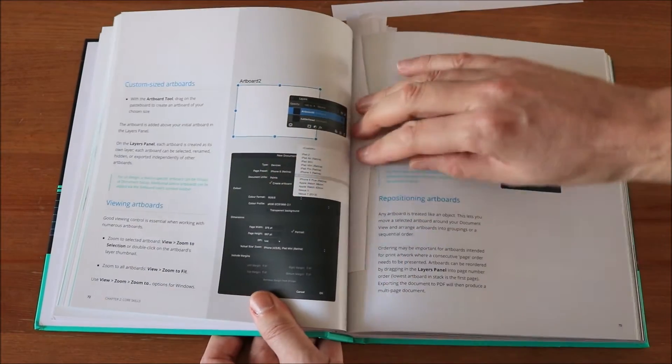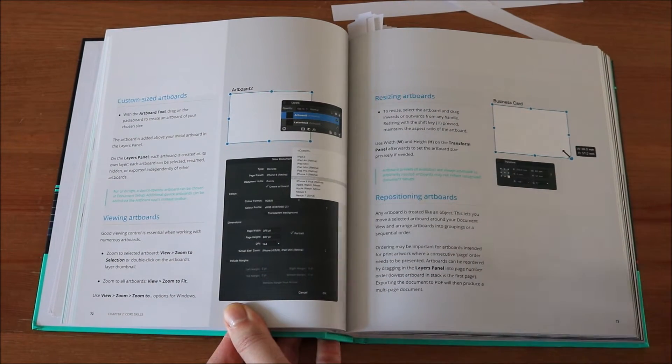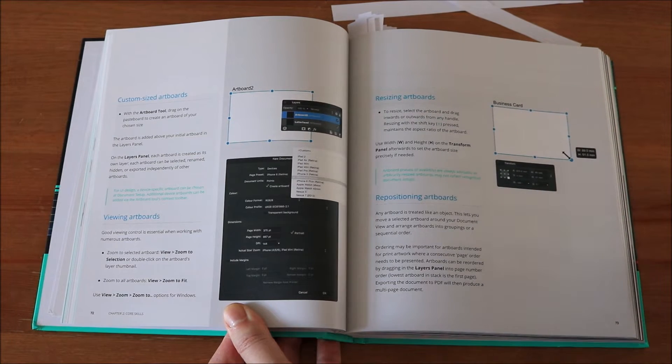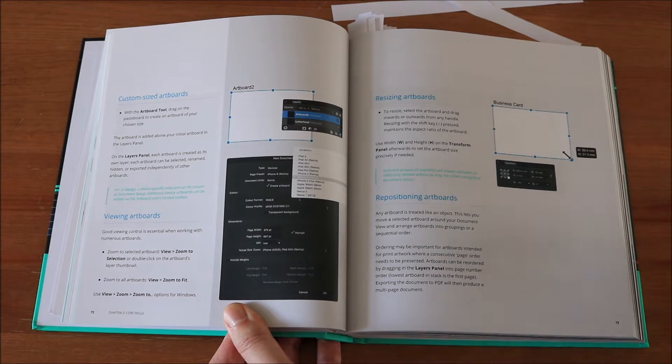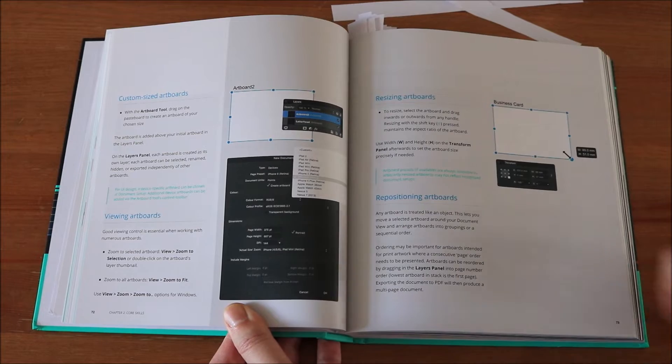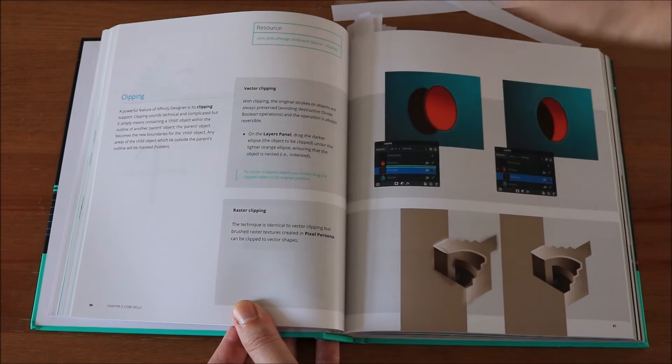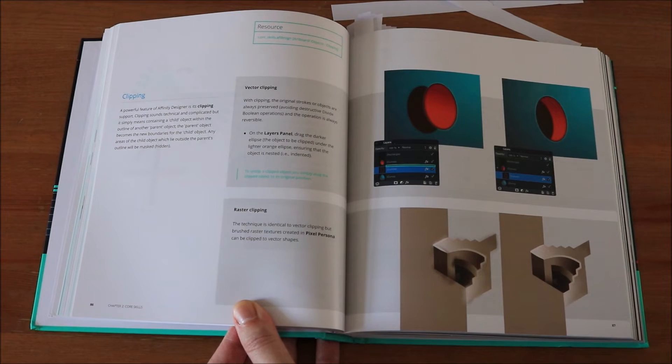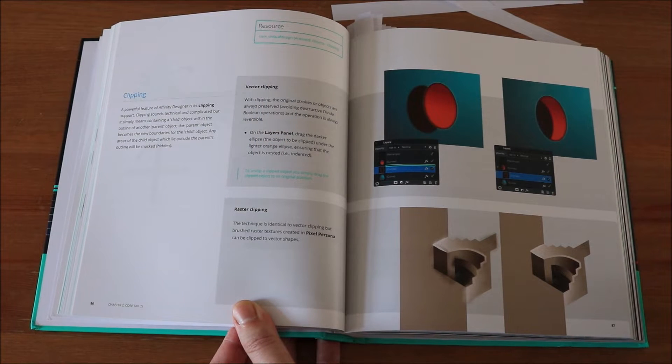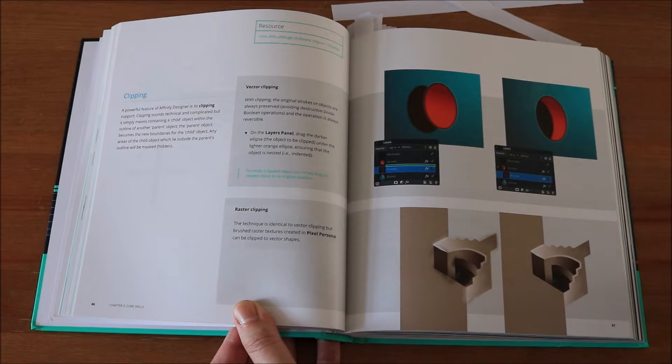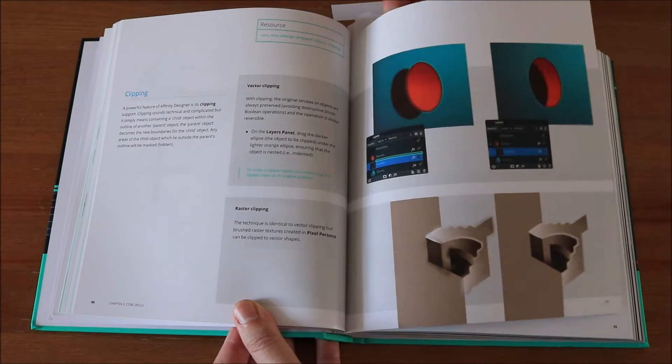Let's go to the next part and you can see here again, for example, here it explains what artboards are, how to work with them, business card. Interestingly, it's the same example that I'm giving in my video that I created in the comparison between what is Affinity Photo, what is Affinity Designer. So, really nice and short explanations that tell you how to use what. Here, for example, it shows what clipping is. So you have vector clipping, you have raster clipping. It explains the difference between the two and how to apply that in a very basic way because this is just explaining the core skill of using clippings.